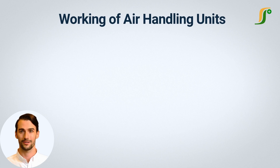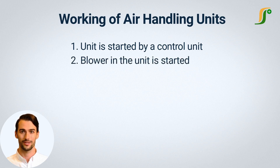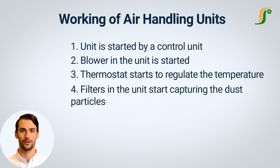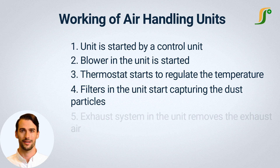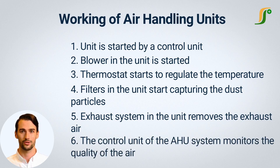The steps of working in an air handling unit: The unit is started by a control unit that monitors the specific requirements of the area. The blower in the unit is started at high speed to circulate the air. The thermostat regulates the temperature required in the area. Filters start capturing dust particles and bacteria present in the air that may cause contamination in products. The exhaust system removes exhaust air from the filter and releases it outside. The control unit monitors the air quality in the plant and adjusts the fan speed and thermostat settings according to requirements.